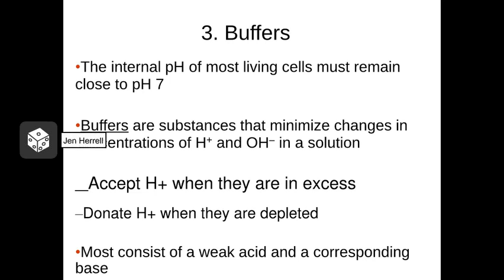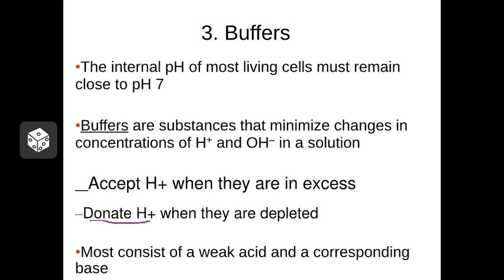The last thing to consider in this chapter are chemicals called buffers. Buffers are chemicals found in natural systems — we also use them in the lab — and what they do is stabilize pH by minimizing changes in hydrogen and hydroxide concentration in a solution. Buffers consist of both an acidic component and a basic component that work together to keep the pH within a certain range. The basic component will accept hydrogen ions when they are in excess, absorbing that hydrogen and raising the pH back up. The acidic component will release hydrogen ions when they are depleted, bringing the pH back down.